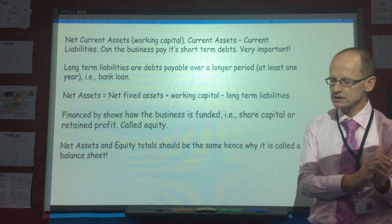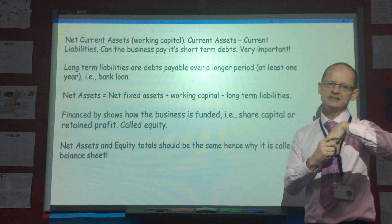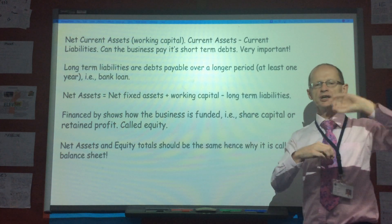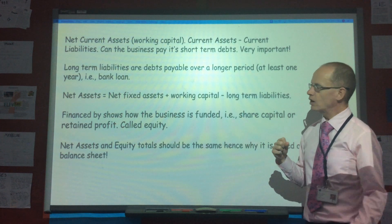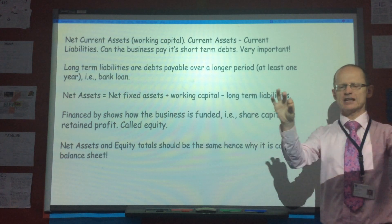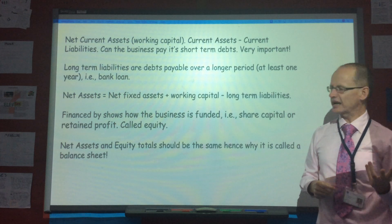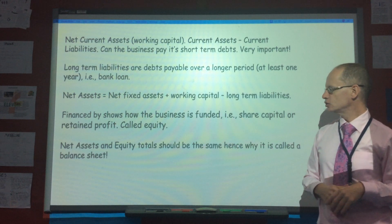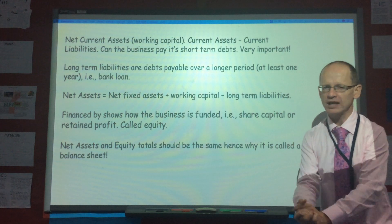The 'financed by' part at the end of the balance sheet shows how the business is funded. We have two examples: share capital — money invested by the shareholders or the owners — and retained profit. The very end part of the balance sheet is called equity. The net assets and equity totals should be the same, hence why it's called a balance sheet.